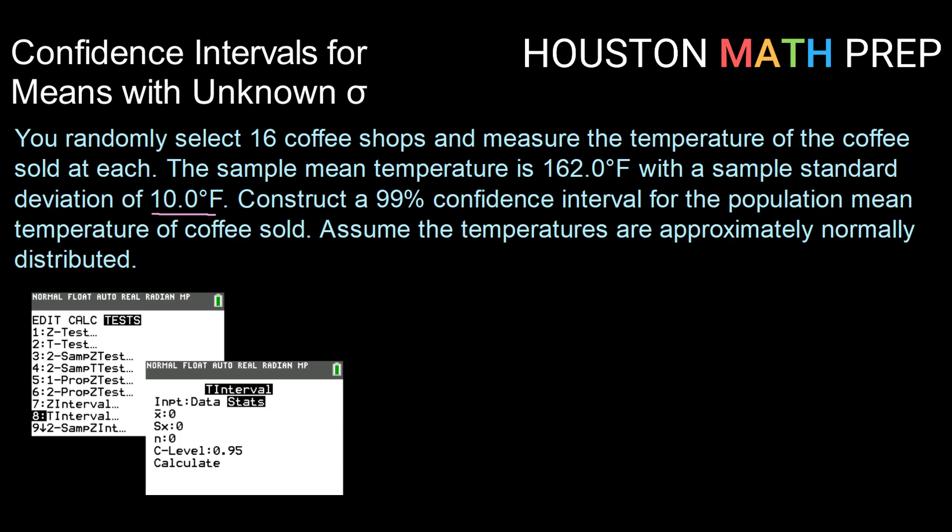We can use our calculator to do this if we go underneath the stat menu and toggle over to tests. Right below the z interval, you'll see a t interval. When we open that up and toggle over to the stats option, it's going to ask us for 4 inputs.